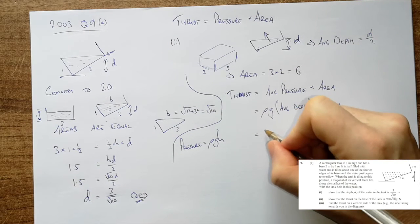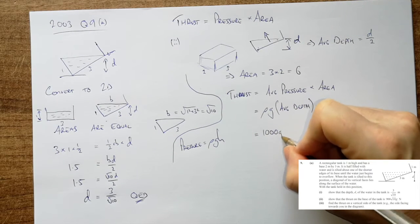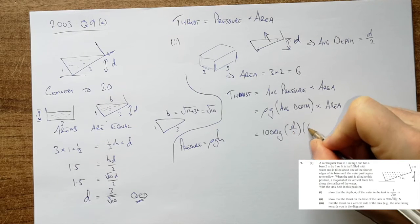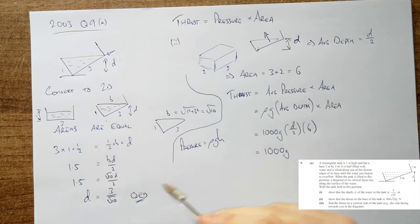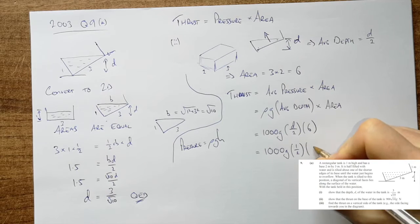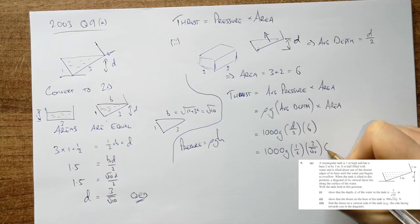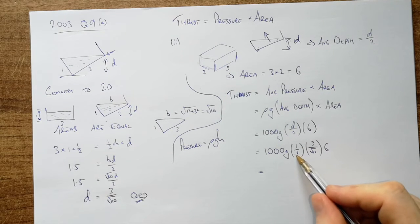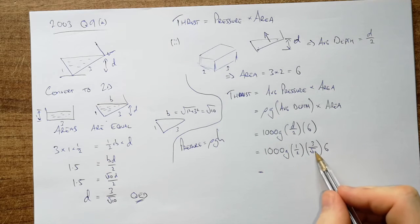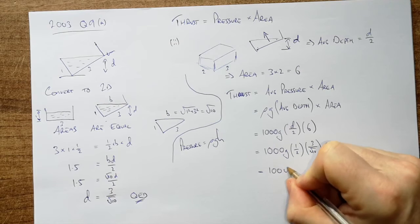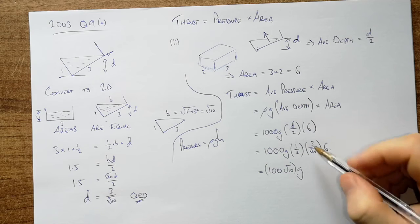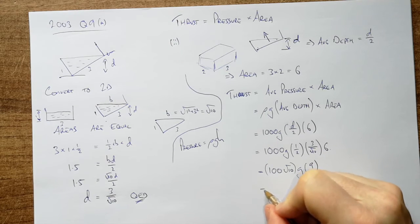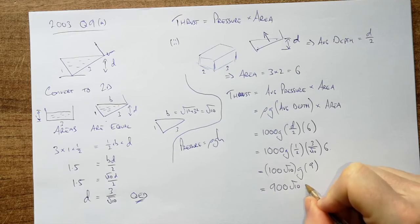So thrust is 1000 by g by d over 2 by 6. Sub in d, 1000 g and d is, double check, that's root 3 over 2. So we're just going to separate these out, 3 over root 10 by 6. Bring all of that together and we can see, the 1000 divided by root 10 is going to be 100 root 10. Put a few brackets in there, by g, 6 divided by half is 3, so that's going to be by 9. So we end up with 900 root 10 g.